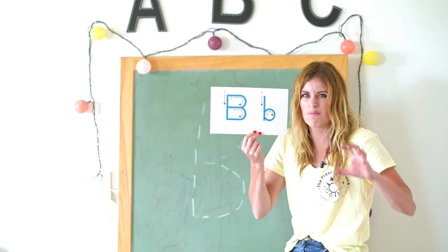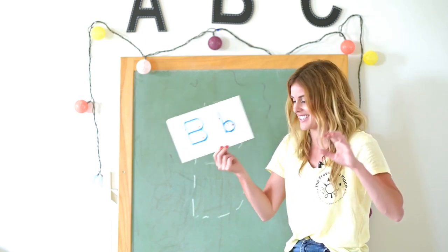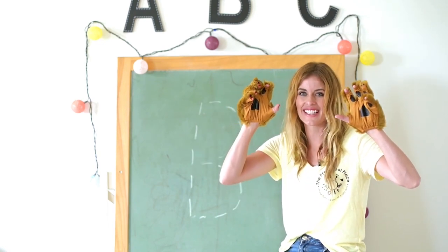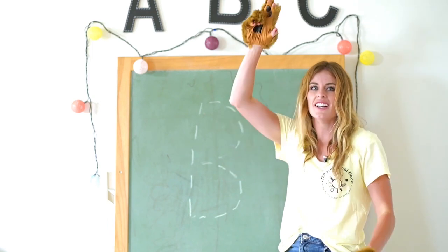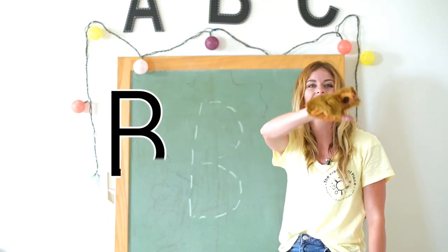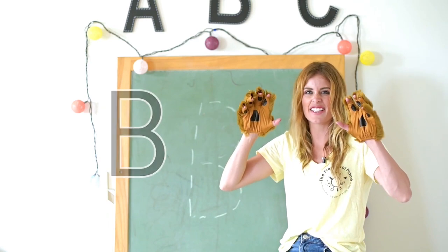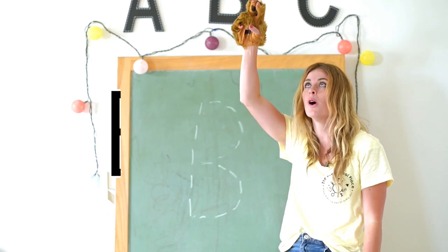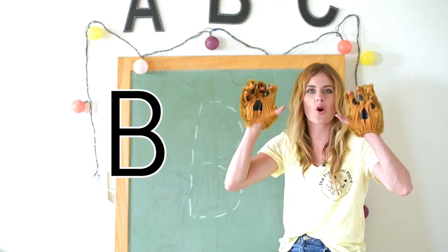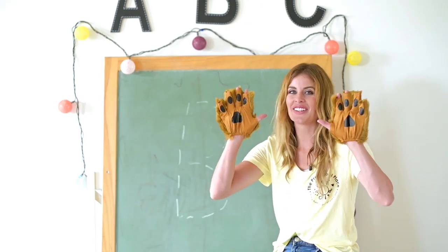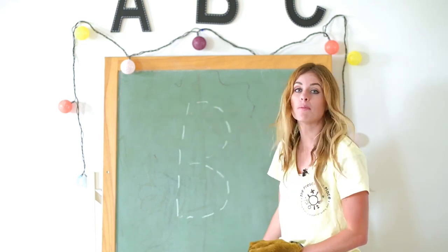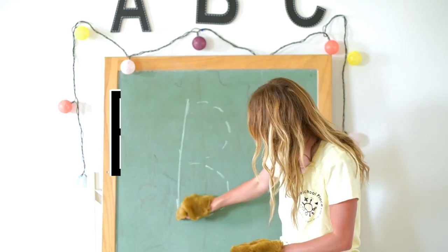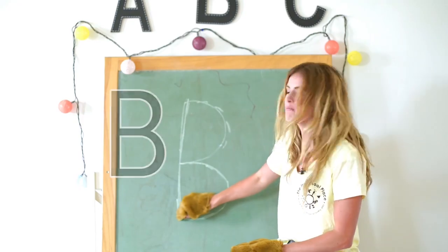Let's use our bear claws to trace the letter B. Look at my bear claws — can you get some pretend bear claws out? Down, up, around, around B. Let's say it in a bear voice: down, up, around, around B. Remember, we always start our letters at the top: down, up, around, around B.